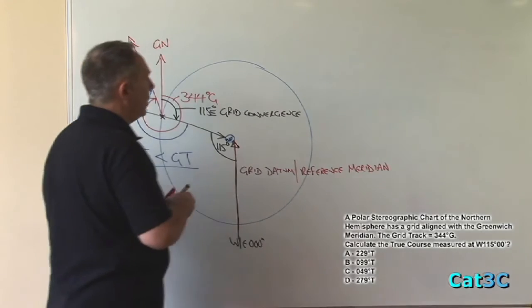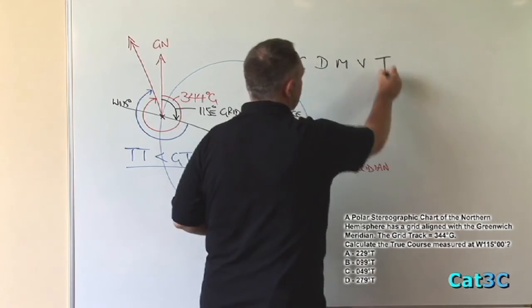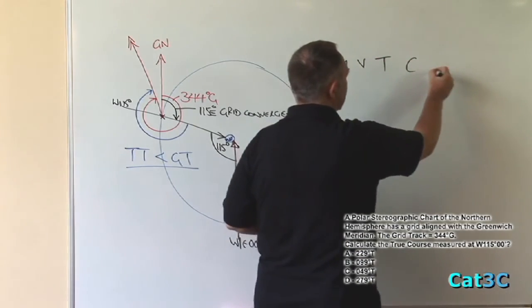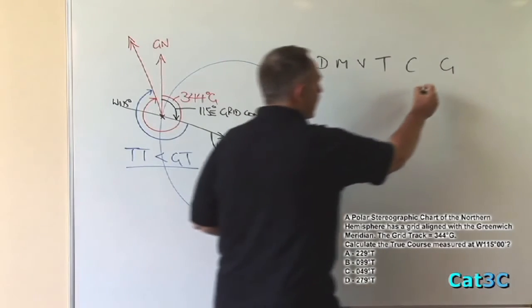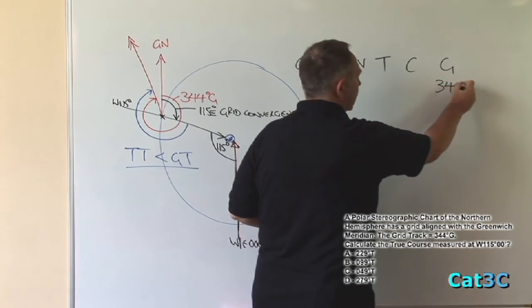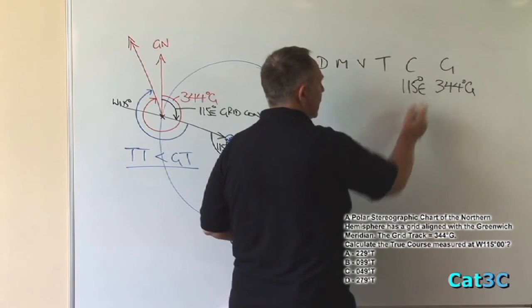If I was to plot this onto Cadbury's dairy milk very tasty and add onto it C G, I can put my grid track in of 344 degrees grid, add in the convergence of 115 degrees east.